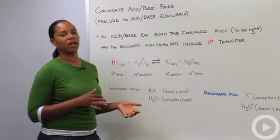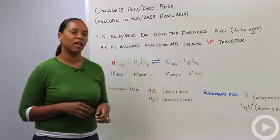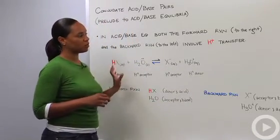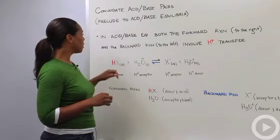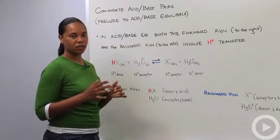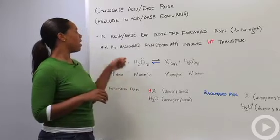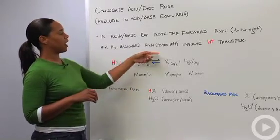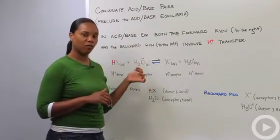Remember again that an acid is a proton donor and a base is a proton acceptor when we're talking about this system. So in an acid-base equilibrium, both the forward reaction, the reaction moving to the right, and the backwards reaction, the reaction moving to the left, involve proton transfer.